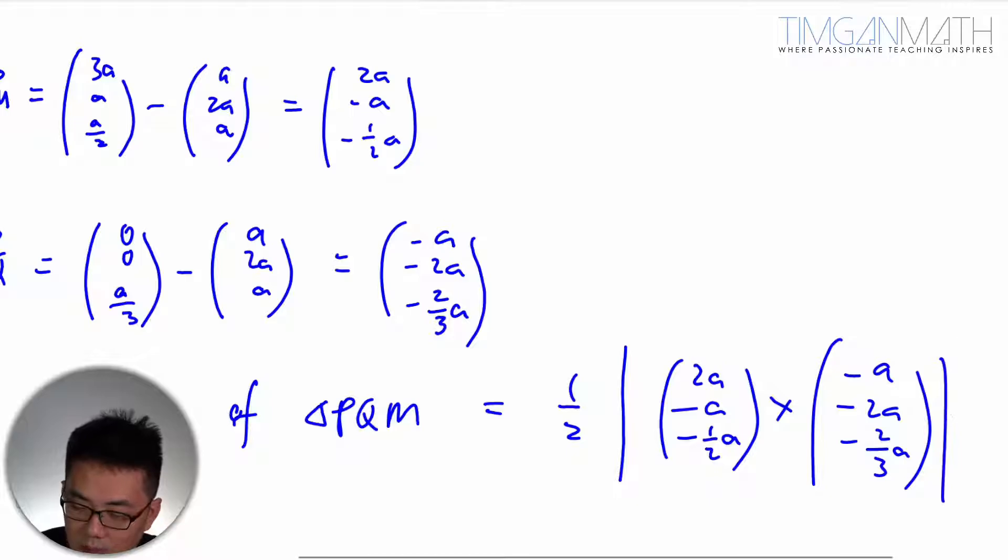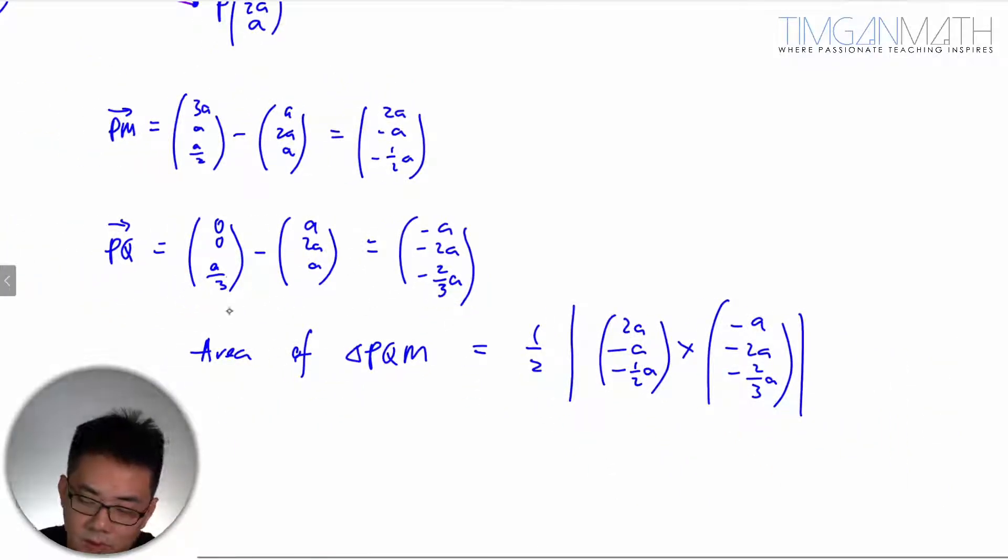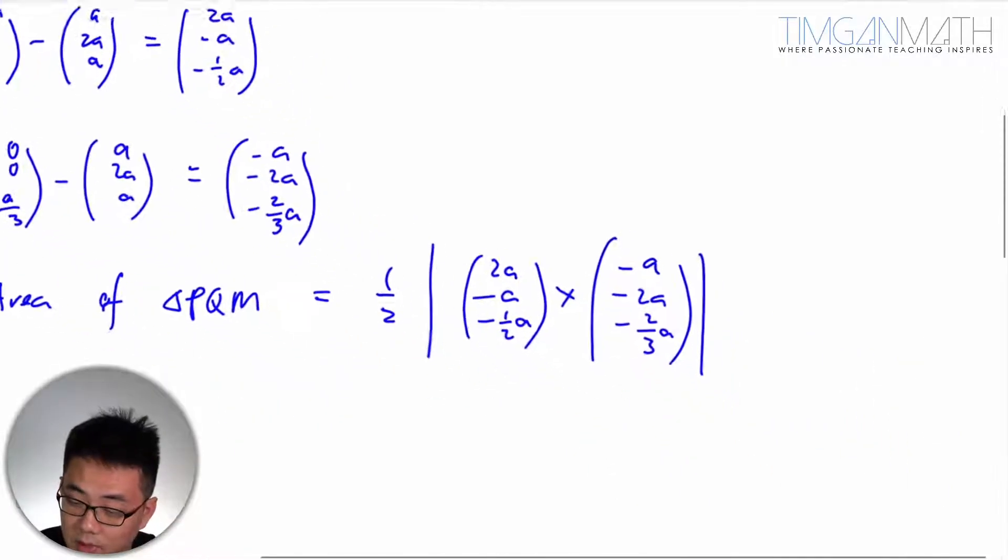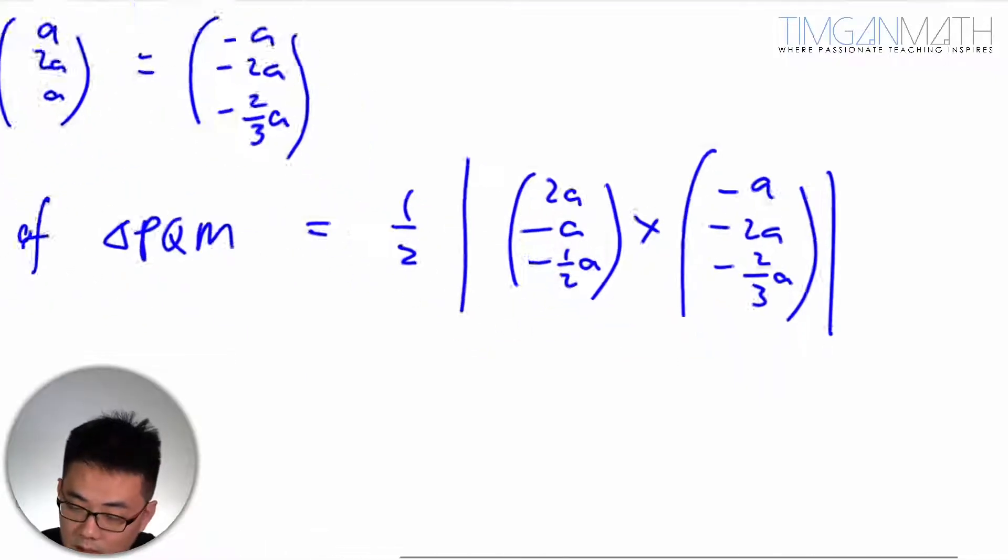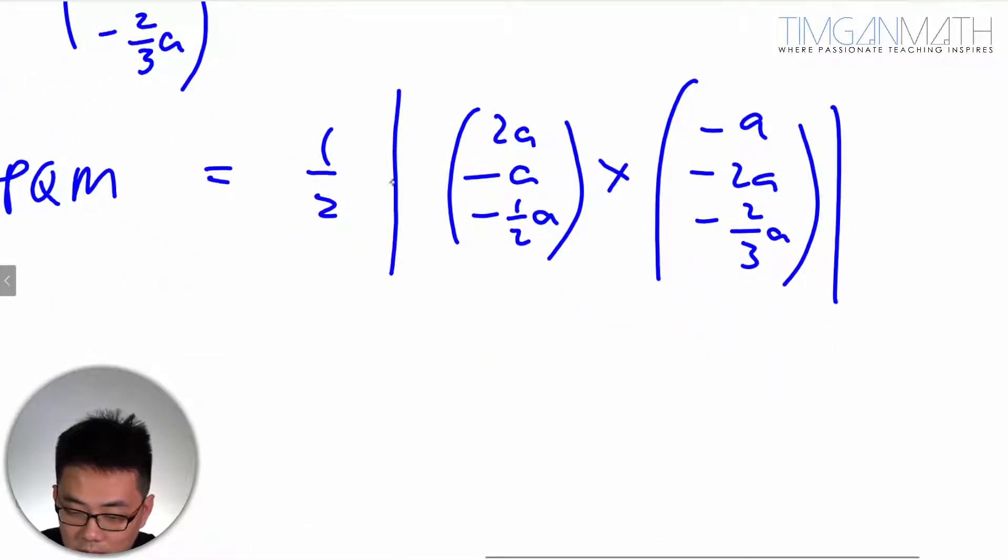You can actually just take the positive side, even though it's very unsightly, right? So you can actually just change all this to positive. But what I'm going to do is actually I'm going to factorize the A out because A is very annoying.